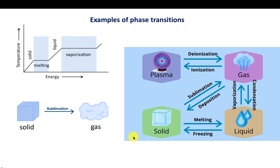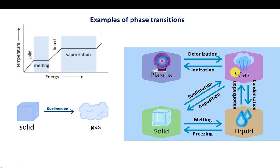More generally: you give a solid more and more energy in the form of heat, it starts to melt, and the temperature remains constant until all of it has melted into liquid. Give it more heat, it vaporizes, and the temperature doesn't change until all the liquid has become gas. If you give this gas more and more energy, the atoms and molecules move faster and faster, collide more and more, and if they collide hard enough, the gas will eventually ionize and you'll get a plasma.